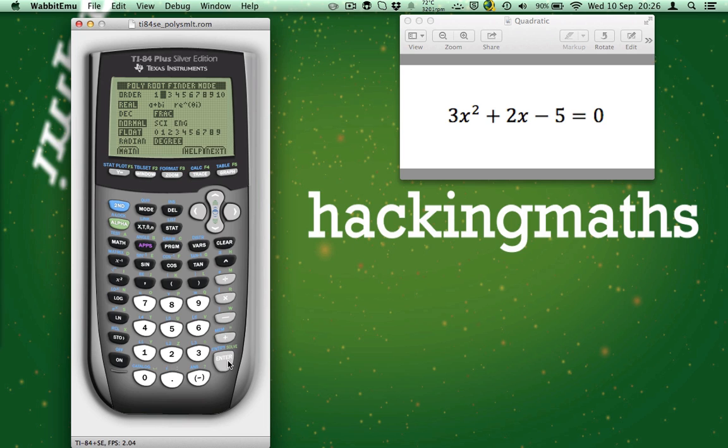We look at our equation and see that x squared, that's the highest power that we have. So our order is 2. Make sure that we have selected 2. Then press Enter.